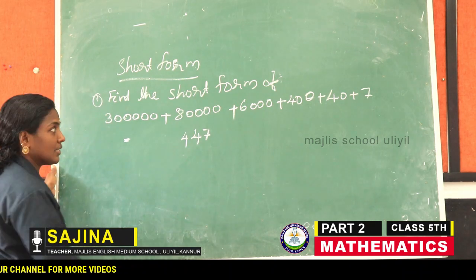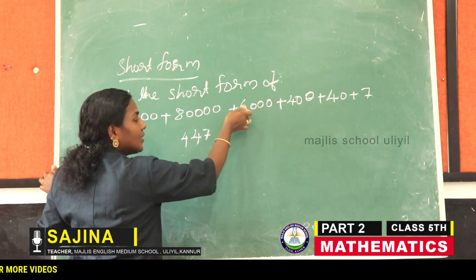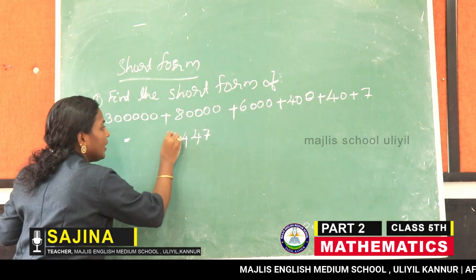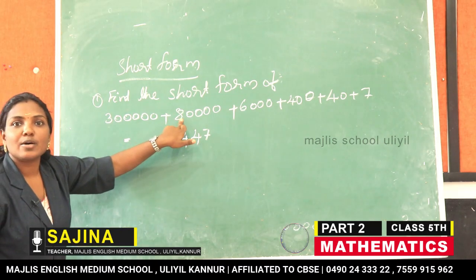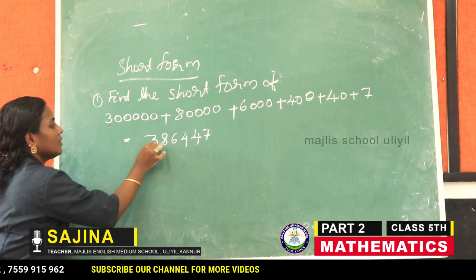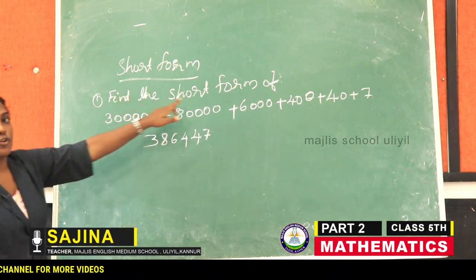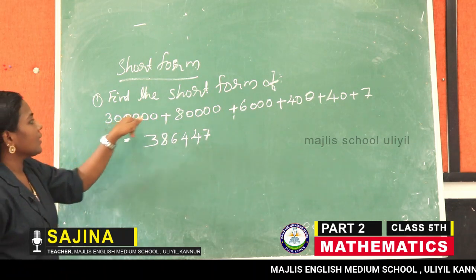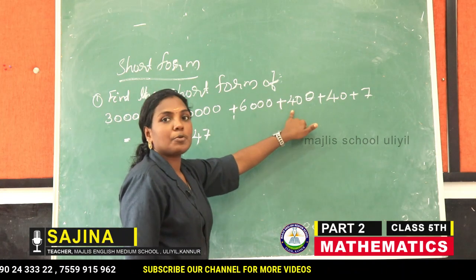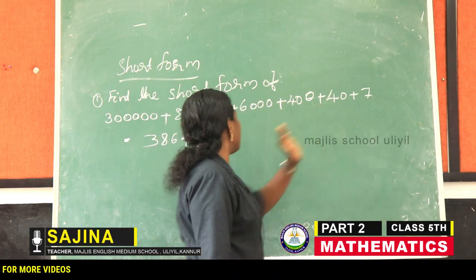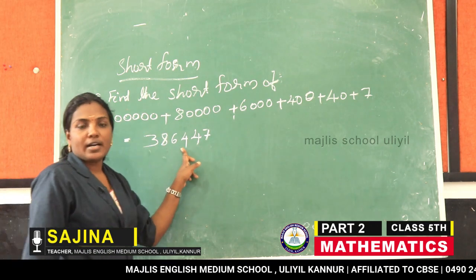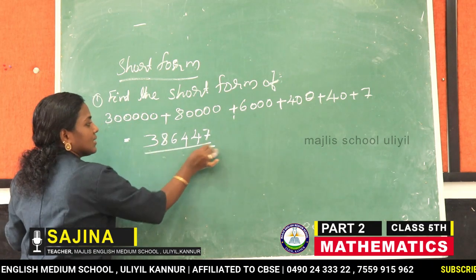Next is thousands place — six thousand, so six is in the thousands place. Then eight is in the eighty thousands place, so we write eight here. And three is in the lakhs place. Therefore, the short form is: three lakh plus eighty thousand plus six thousand plus four hundred plus forty plus seven is equal to three lakh, eighty-six thousand, four hundred forty-seven.